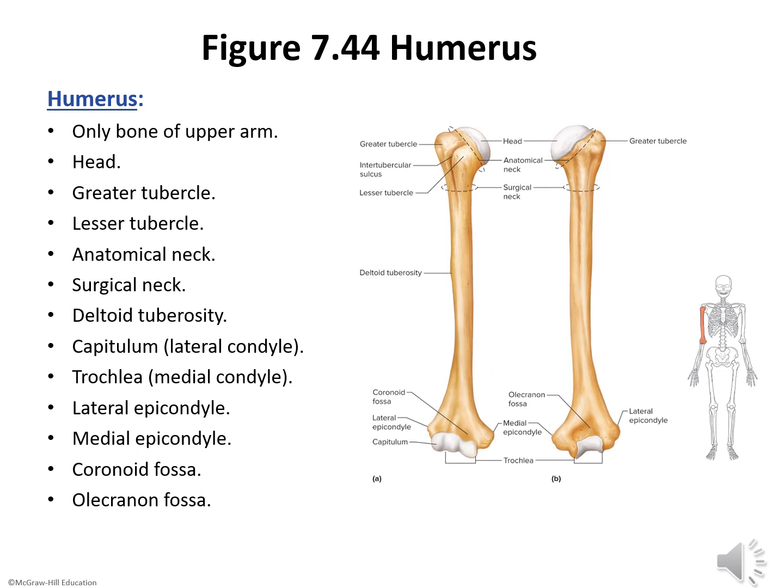At the lower end of the humerus are two smooth condyles: a knob-like capitulum on the lateral side and a pulley-shaped trochlea on the medial side. The capitulum articulates with the radius at the elbow, whereas the trochlea articulates with the ulna. Above the condyles on either side are the epicondyles, which provide attachments for muscles and ligaments of the elbow.